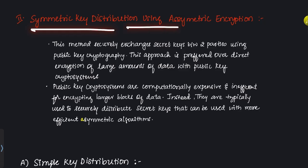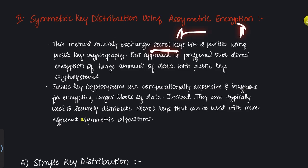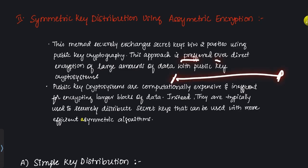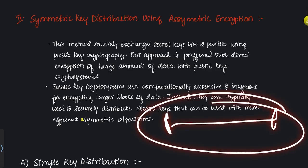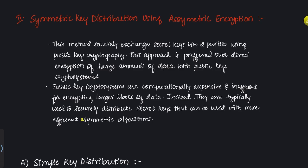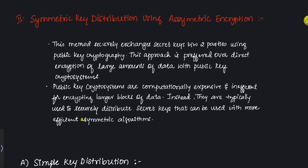Symmetric key distribution using asymmetric encryption — this method will exchange the secret keys between two parties using public key cryptography. This approach is preferred over direct communication because in direct communication there is a threat of an attacker accessing the data. Public key cryptosystems are computationally expensive and inefficient for encrypting large blocks of data, which is why we use them only to securely distribute the secret keys, which will further be used for efficient symmetric algorithms.